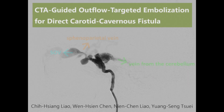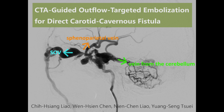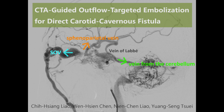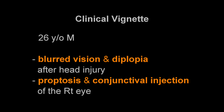CTA guided outflow targeted embolization for direct carotid cavernous fistula. This is a 26-year-old male with blurred vision and diplopia after head injury. Proptosis and conjunctival injection were also noticed.